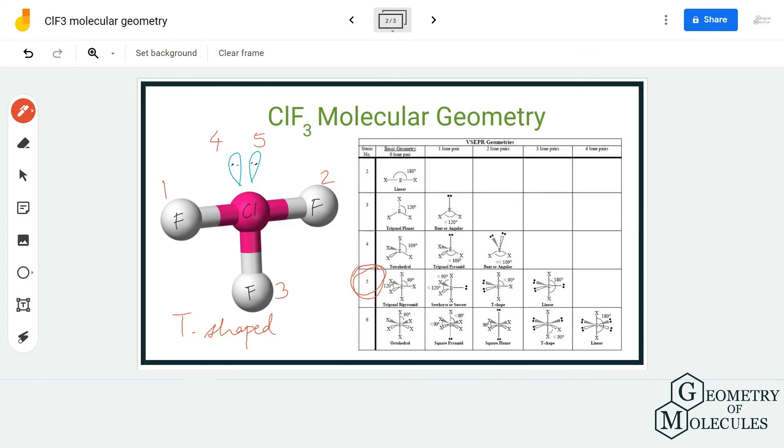five. So if you refer to this table, the molecules that have steric number five and have two lone pairs - because there are two lone pairs on this chlorine atom - have t-shaped molecular geometry. Hence the molecular geometry for ClF3